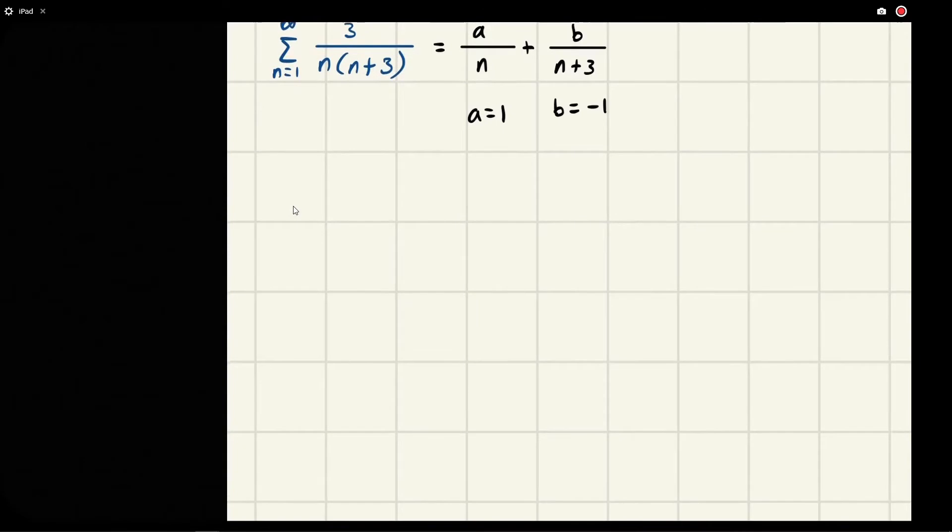So now we've got this. We've got that our sum from n equal 1 to infinity is equal to 1 over n plus, well in this case we'll just put the negative here since b is negative 1, negative over n plus 3.